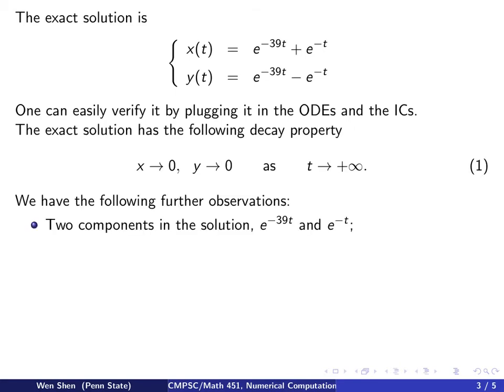We make some further observations. As we saw, there are two components in the solution. One is decaying at rate negative 39, and the other is decaying at rate negative 1. Coincidentally, but not, that the rate of decay are exactly the two eigenvalues of the coefficient matrix. One was negative 1, and the other was negative 39.